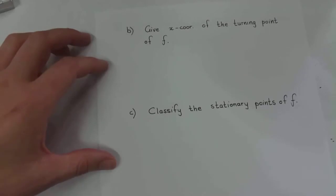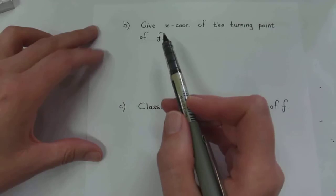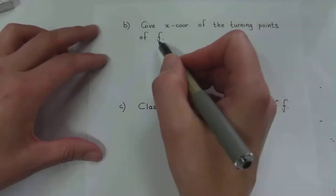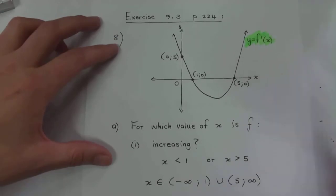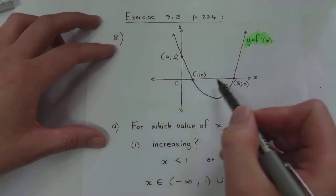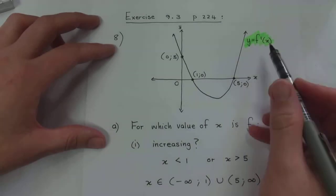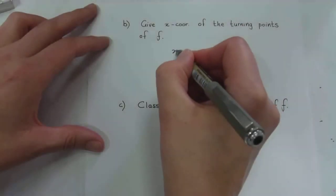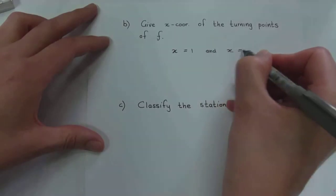The next question asks for the x-coordinates of the turning points of f. There should be two turning points. The turning points of f are the x-intercepts of the derivative graph — at x equals one, the derivative is zero, so that's a turning point; and at x equals five, the derivative is zero, so that's a turning point. So the x-coordinates of the turning points are x equals one and x equals five.